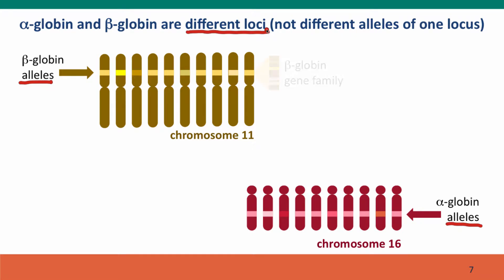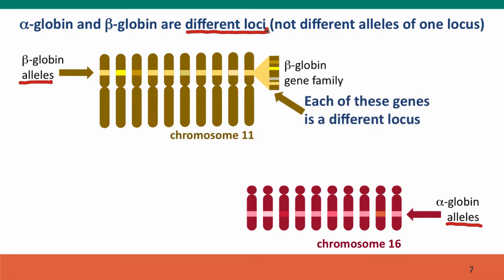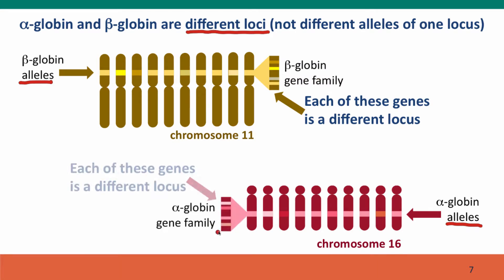The situation is even more complicated, because in fact we have multiple beta globin genes. There was an ancestral duplication after the one that gave rise to alpha and beta versions, and a later series of duplications gave rise to multiple beta globin genes that function in different tissues — for instance, embryonic and fetal tissues versus the adult bloodstream. The same is true for alpha globin. In my drawing there are four different alpha globin loci, each of which will have multiple alleles.